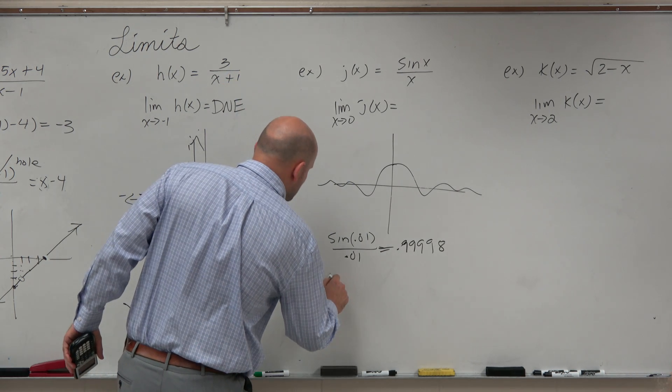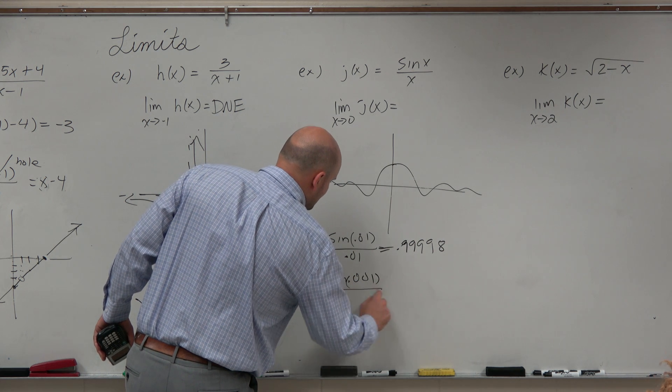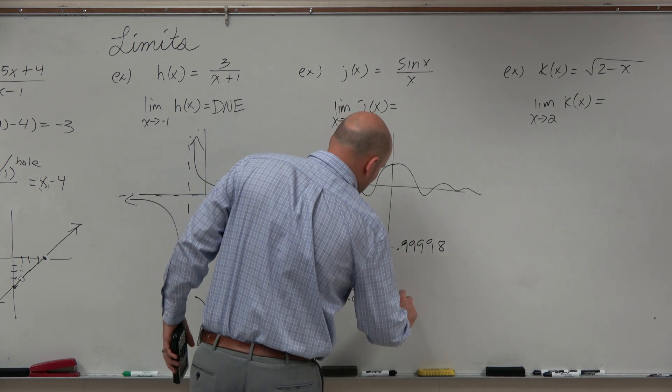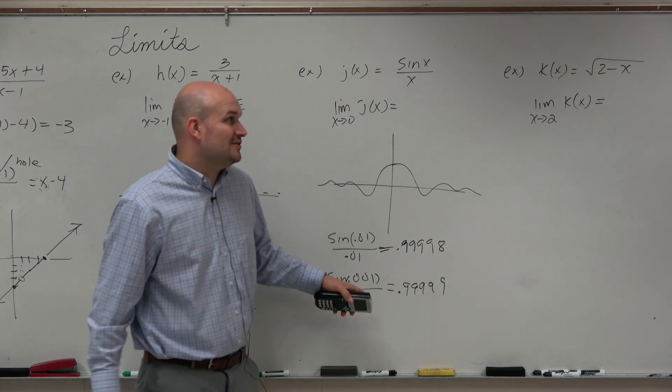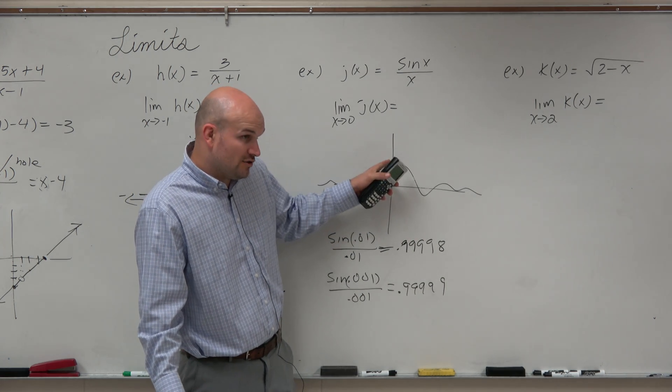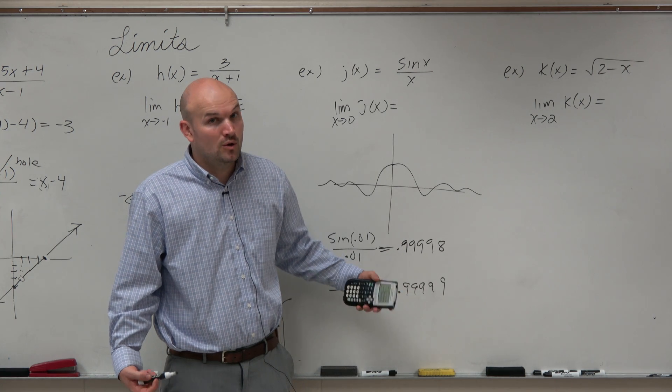So why don't we try it one more time? Why don't we do sine 0.001 divided by 0.001? And when I do that, guess what? I just get more nines. So can you guys now see that as I'm getting closer and closer to 0, the value 0, it's just going to get closer and closer to the value of 1.